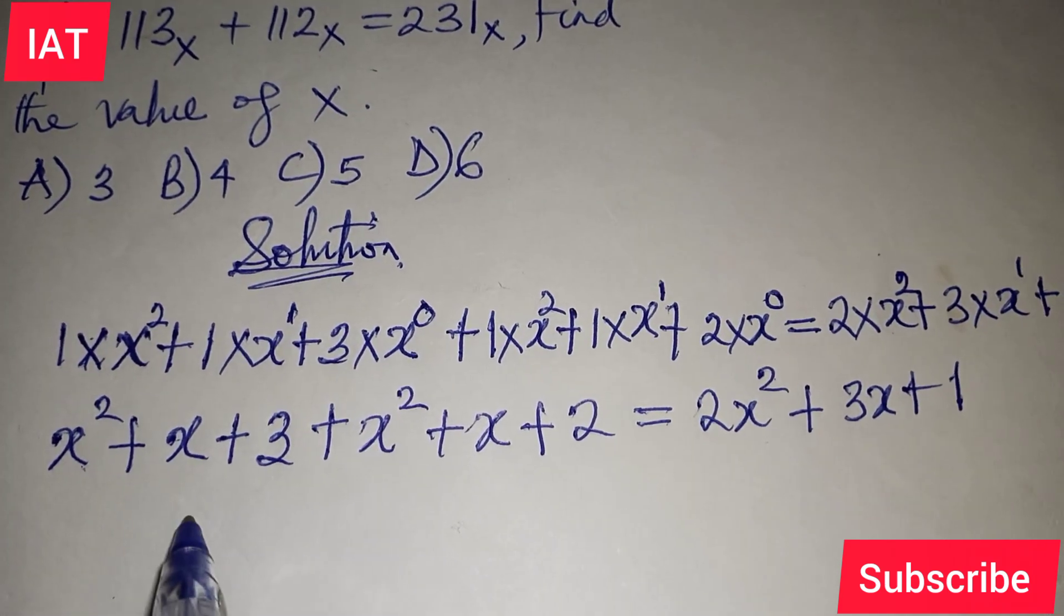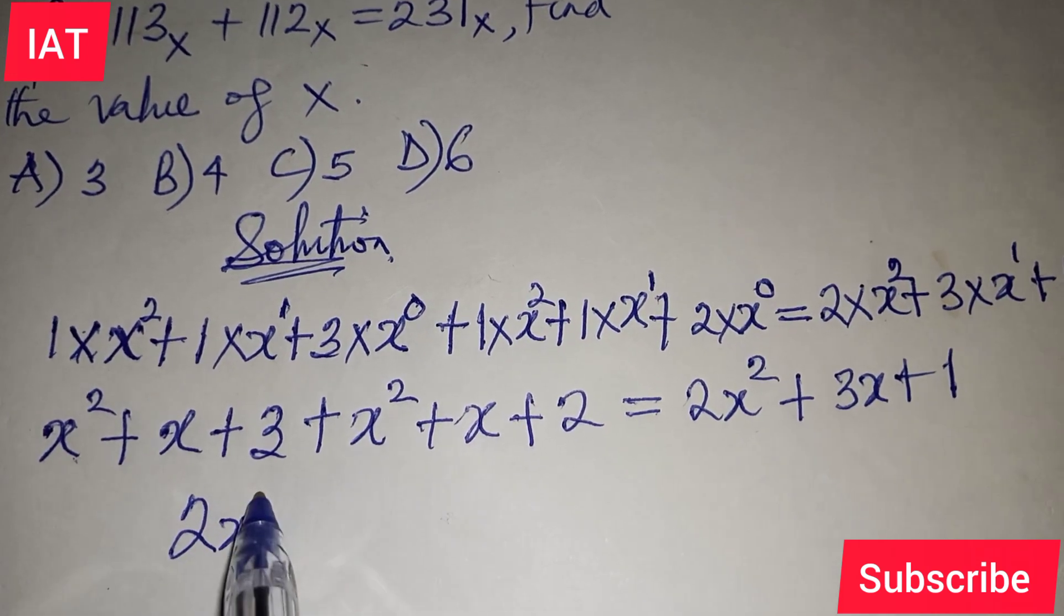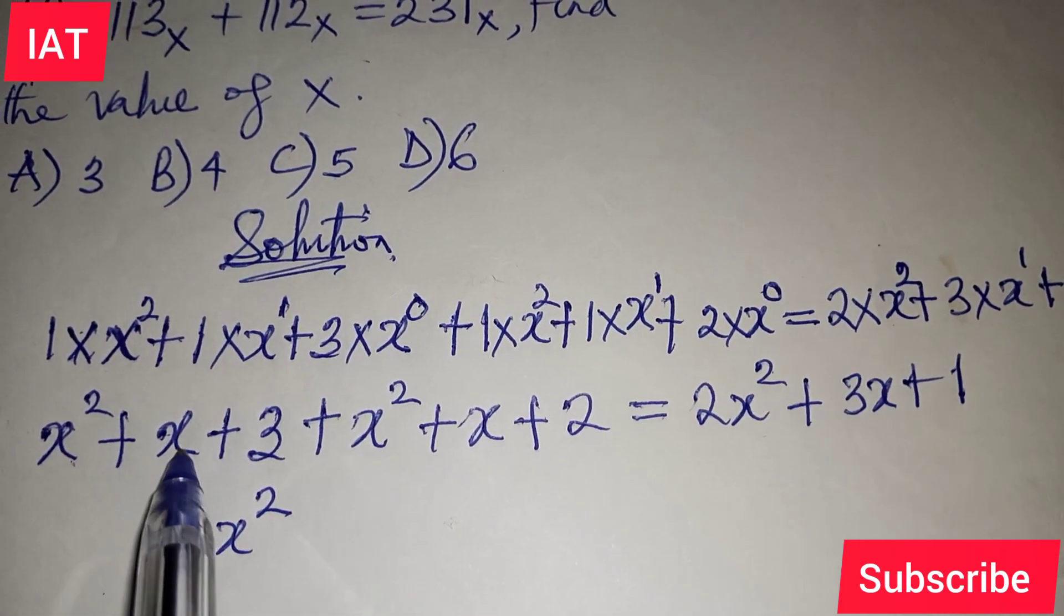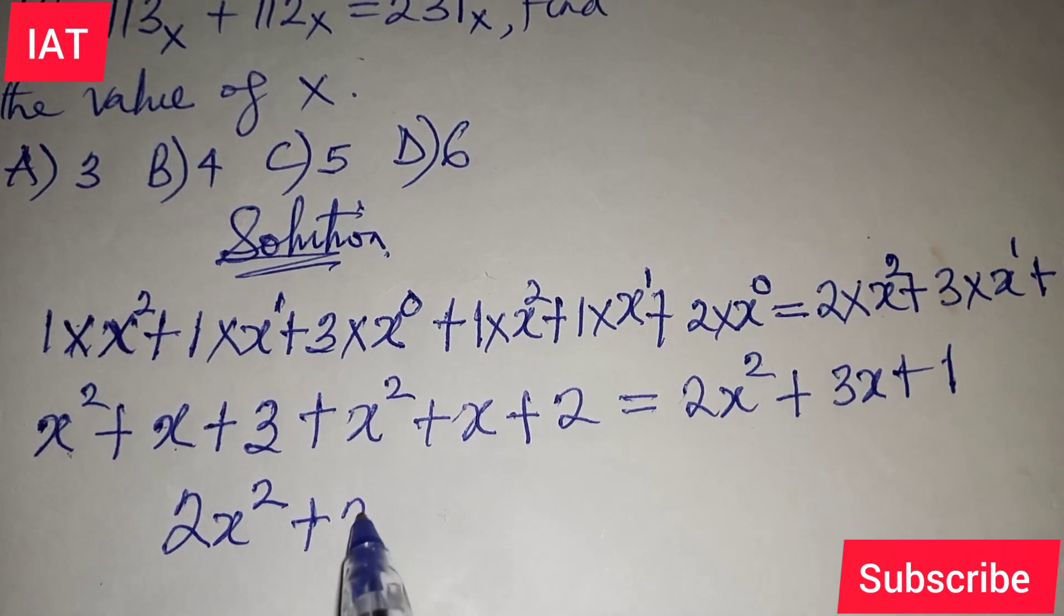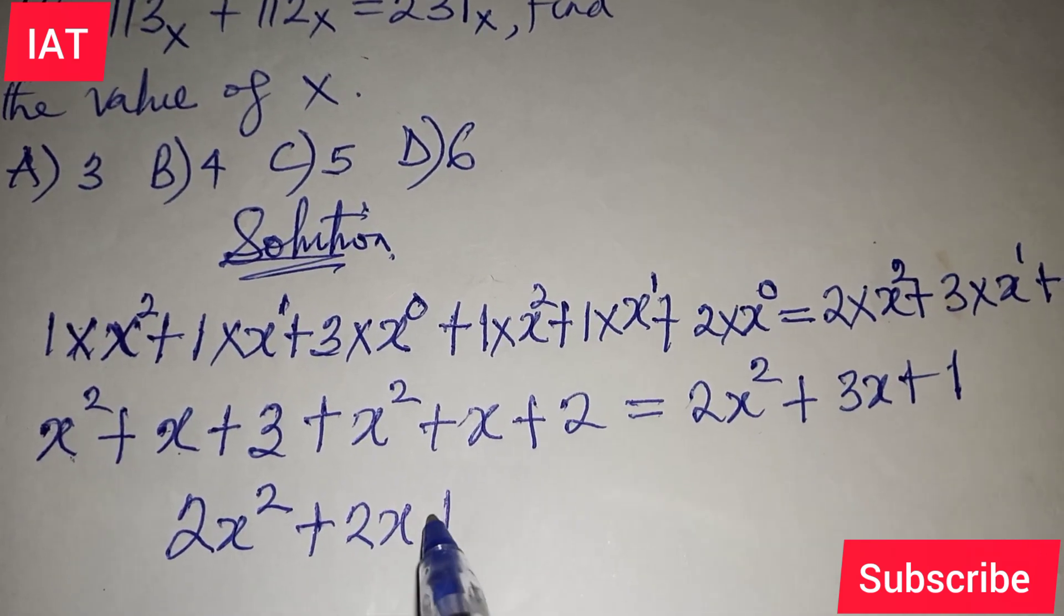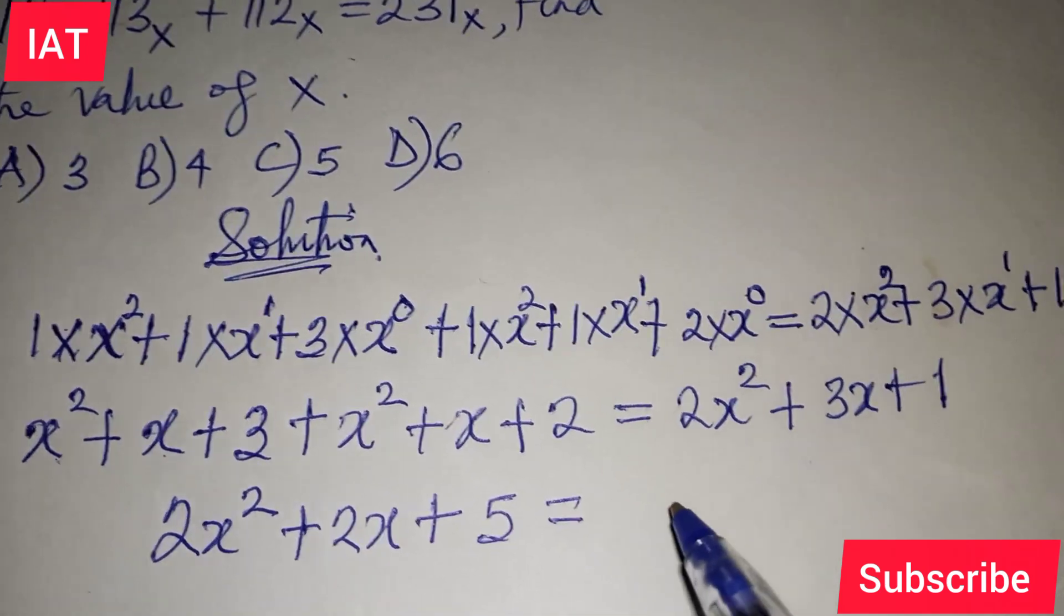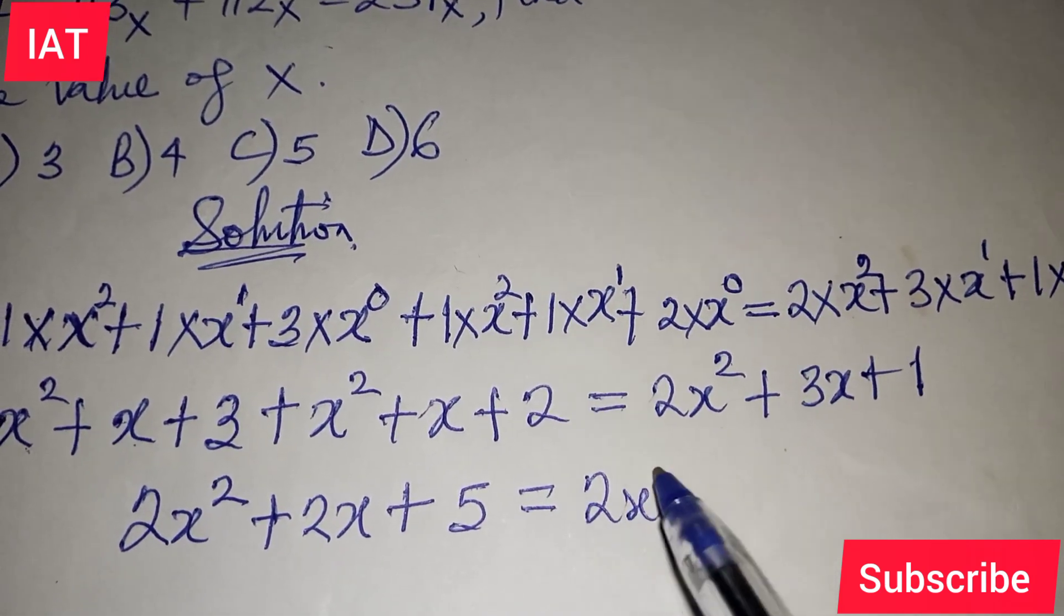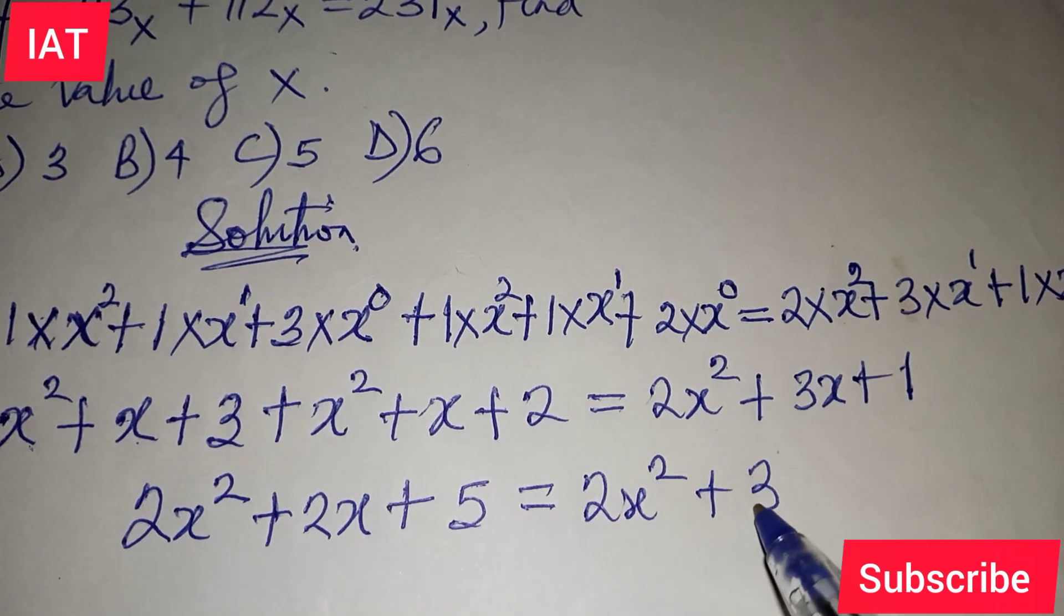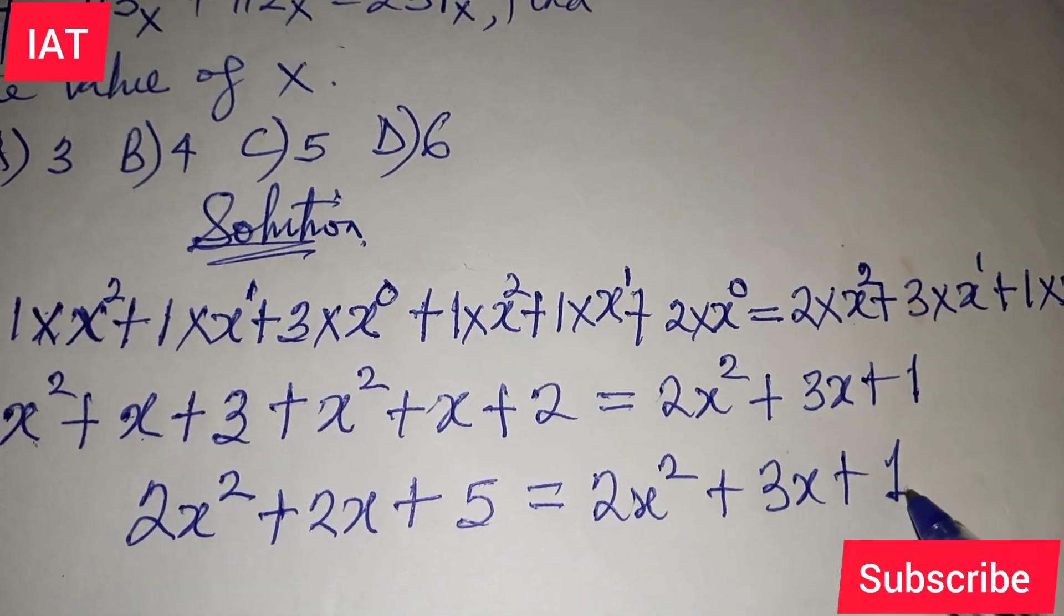What do we need to do on the left-hand side? We need to add X squared to X squared, which gives 2X squared. Also, add X to X, which gives 2X, plus 3 plus 2, that's 5. This equals on the right-hand side 2X squared plus 3X plus 1.